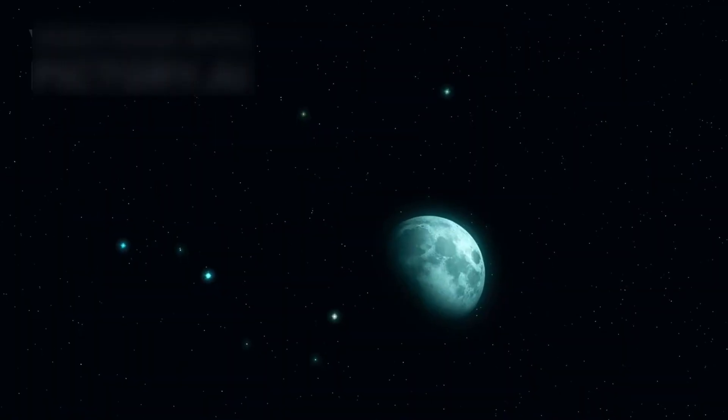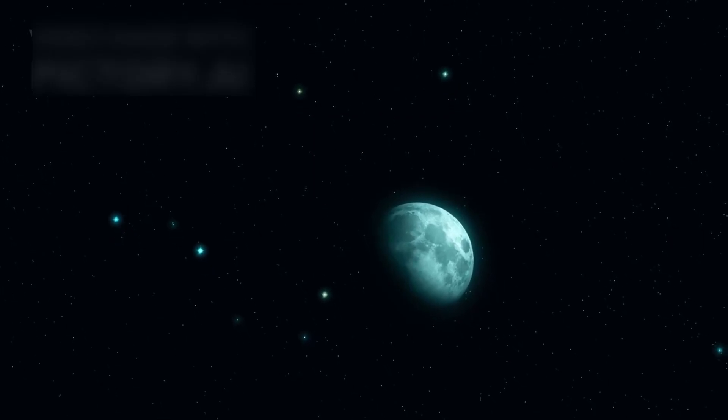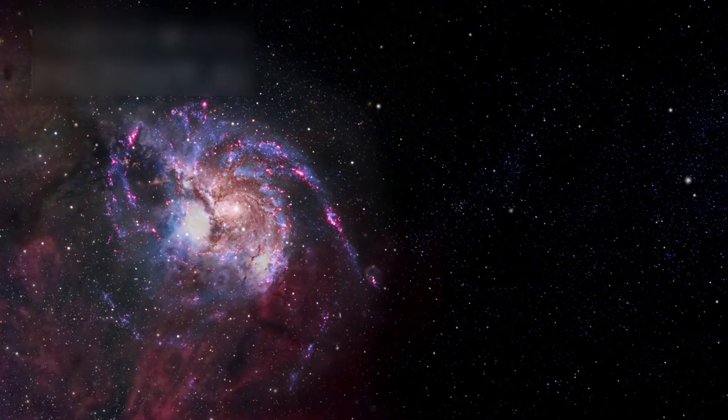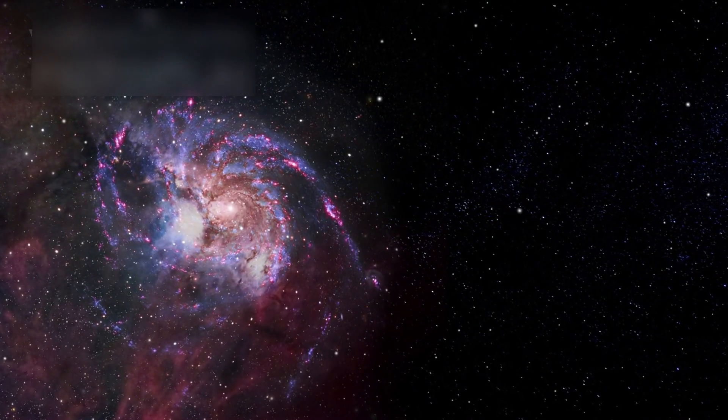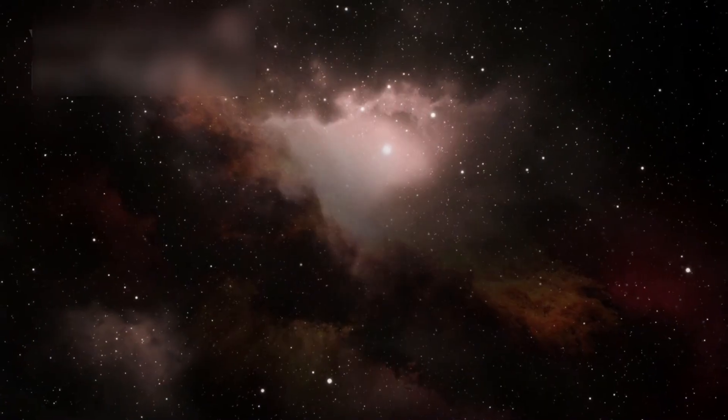By every model, the universe was supposed to be a chaotic infant then, filled with gas clouds and primitive star clusters. And yet, these galaxies display spiral arms, chemical richness, and mature formation. They should not be there. But they are.